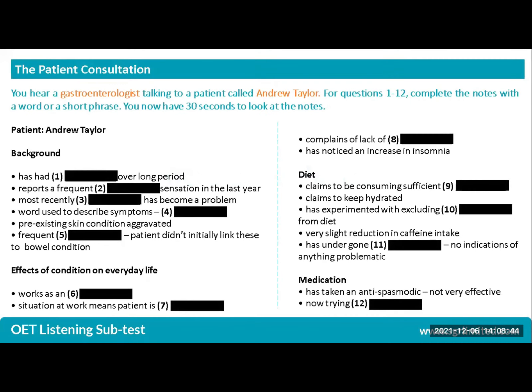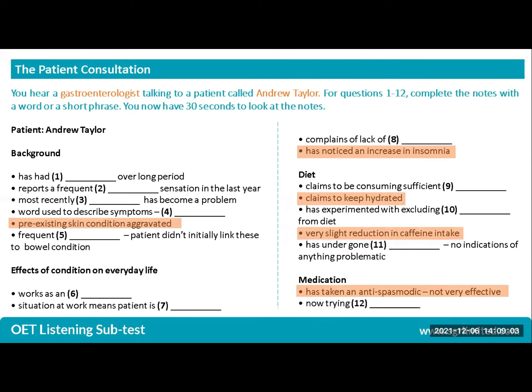The bullet points in your notes include two types of information. The first are gap fill questions, which require you to find the words that complete the sentence. The second type is untested information — bullet points that don't require you to give an answer.